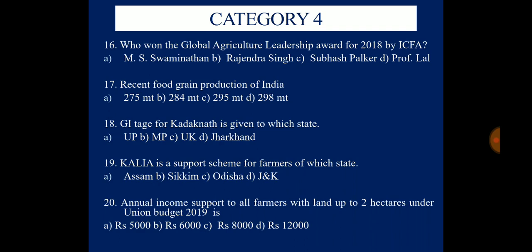Question 18: GI tag for Kadaknath is given to which state? Options are Uttar Pradesh, Madhya Pradesh, Uttarakhand, or Jharkhand. Question 19: KALIA is a support scheme for farmers of which state? Options are Assam, Sikkim, Odisha, or Jammu and Kashmir. Question 20: Annual income support to all farmers with land up to 2 hectares under Union Budget 2019 is — ₹5000, ₹6000, ₹8000, or ₹12000.